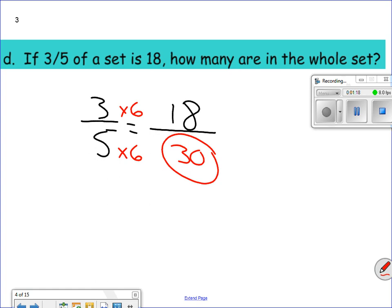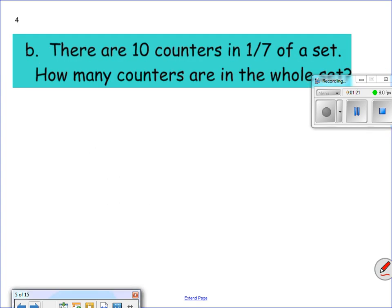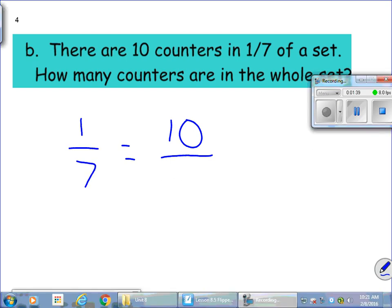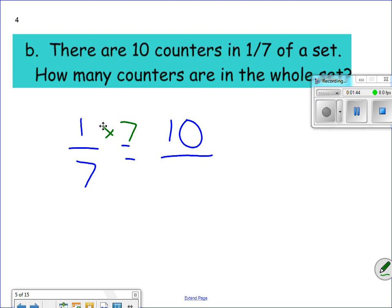Let's take a look at this next one here. There are 10 counters in 1 seventh of the set. How many counters are in the whole set? So 10 is 1 seventh. I have 10 would be part, right? I want to know what my whole is. 1 seventh into 10. 1 times 10 is 10, so 7 times 10 is 70. 70 is my whole set. Let's keep going here.